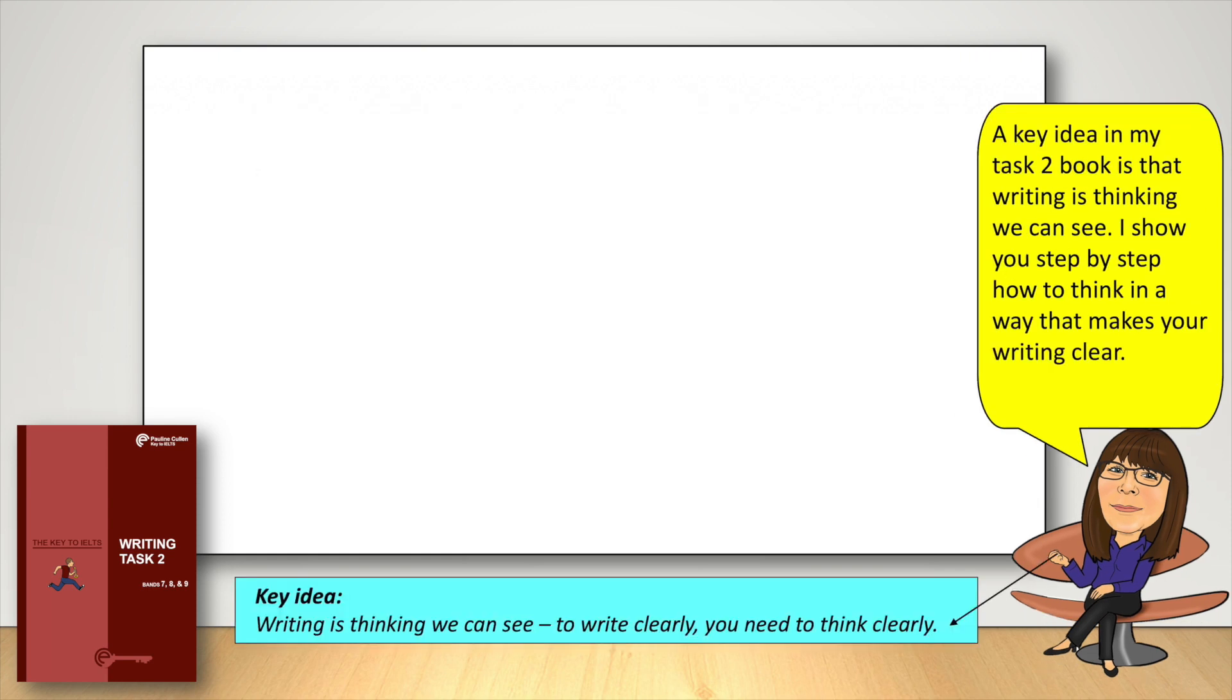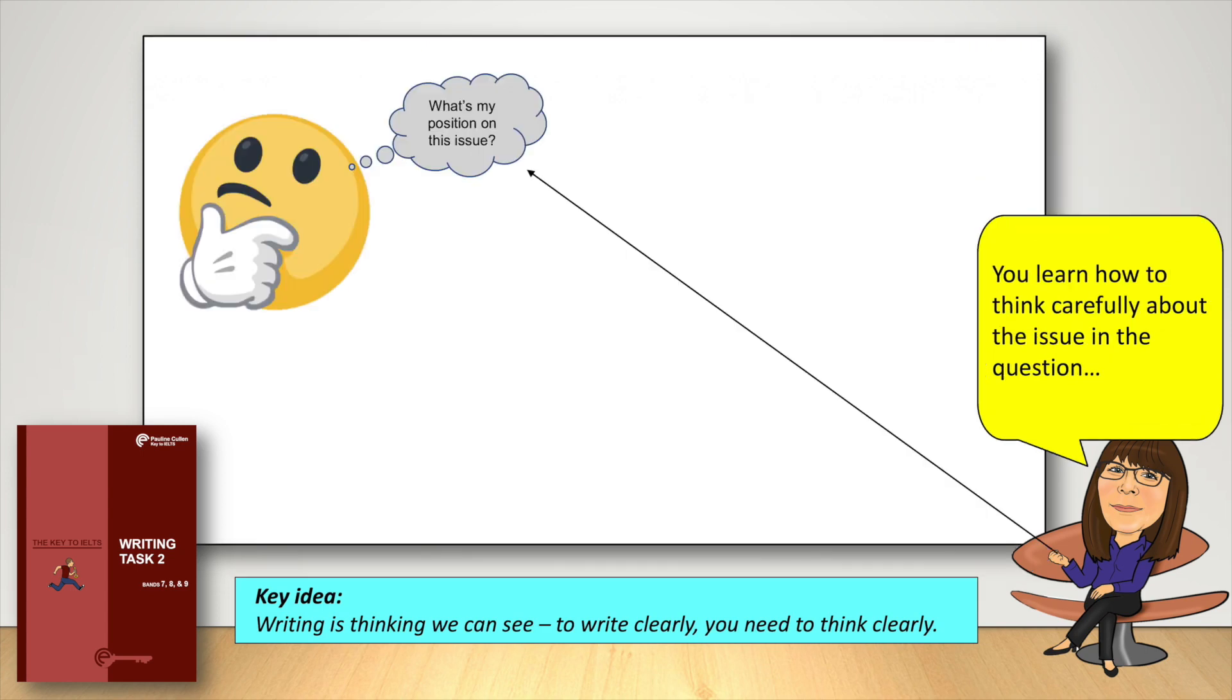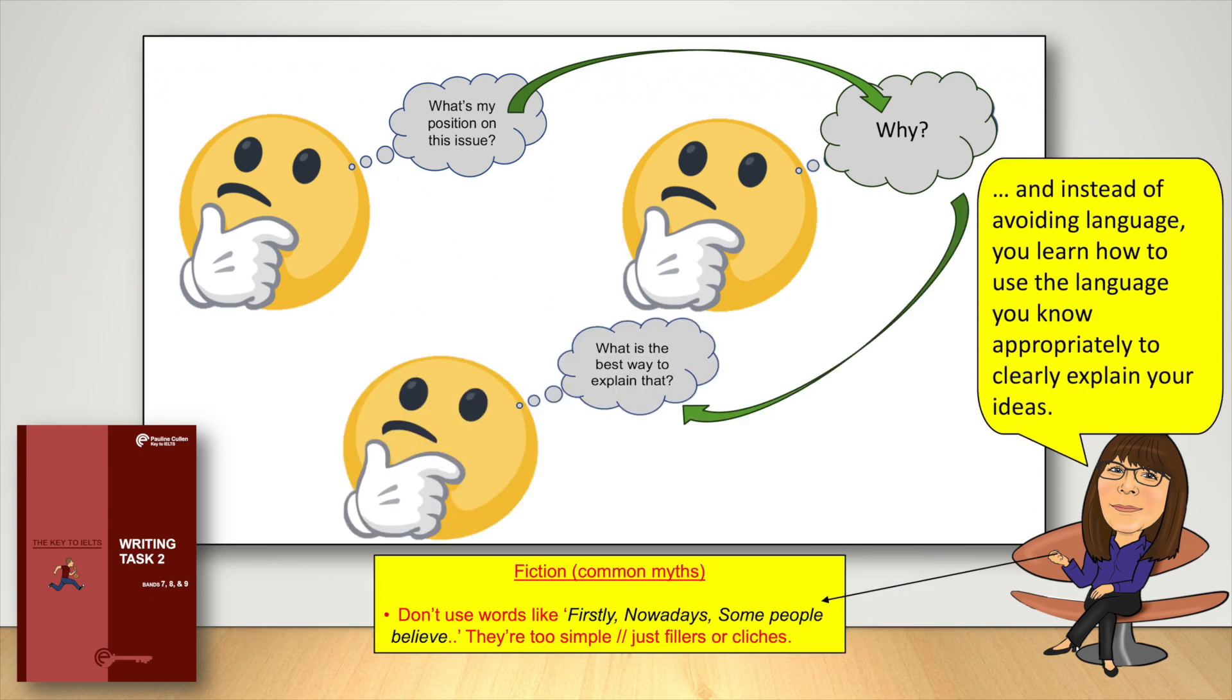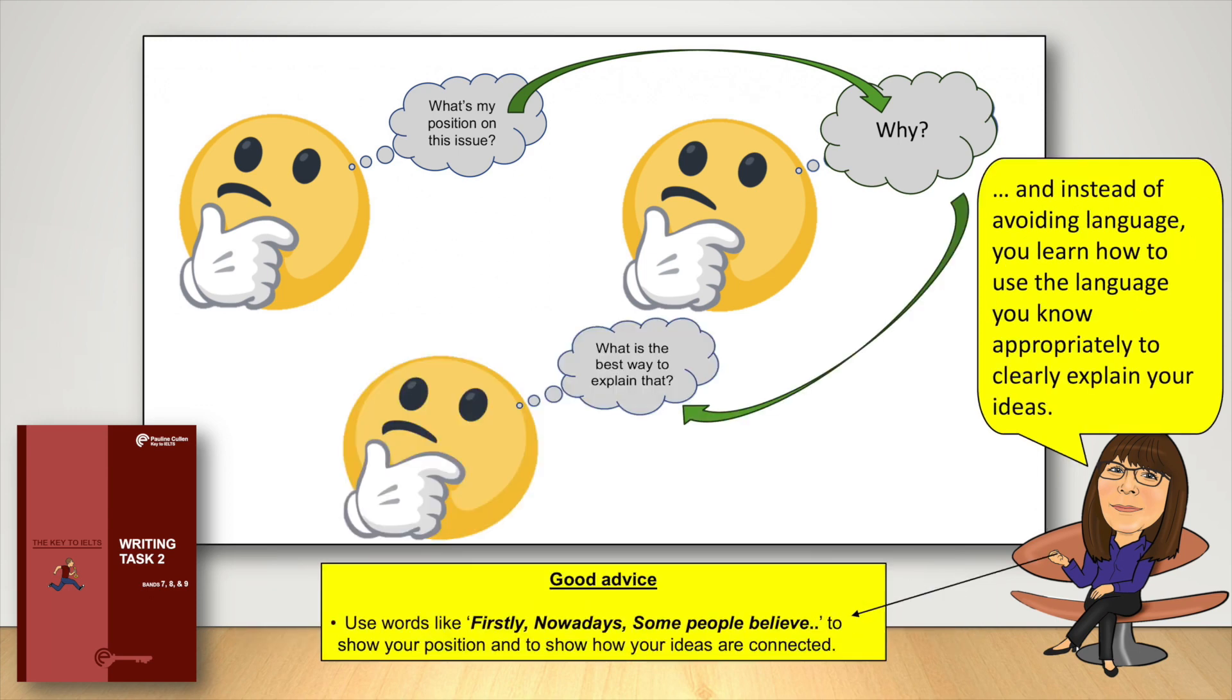A key idea in my task 2 book is that writing is thinking we can see. I show you step by step how to think in a way that makes your writing clear. You learn how to think carefully about the issue in the question, to think critically to gather ideas and form an argument, and instead of avoiding language, you learn how to use the language you know appropriately to clearly explain your ideas.